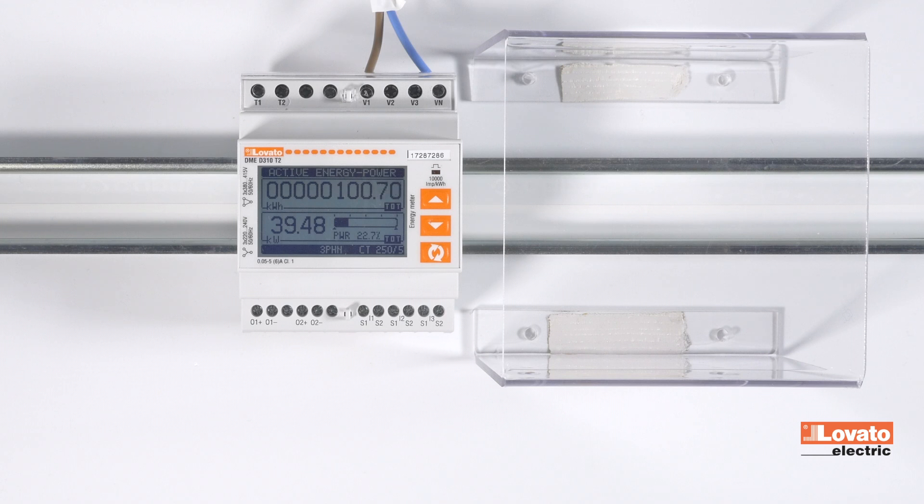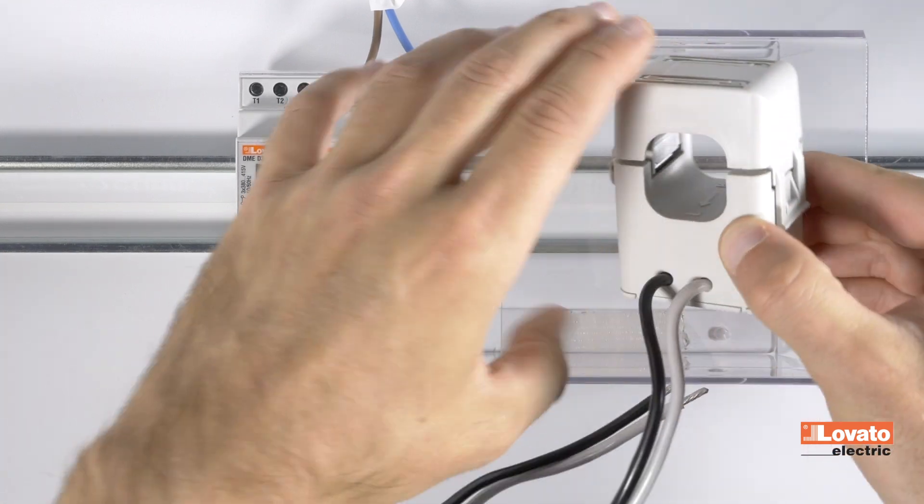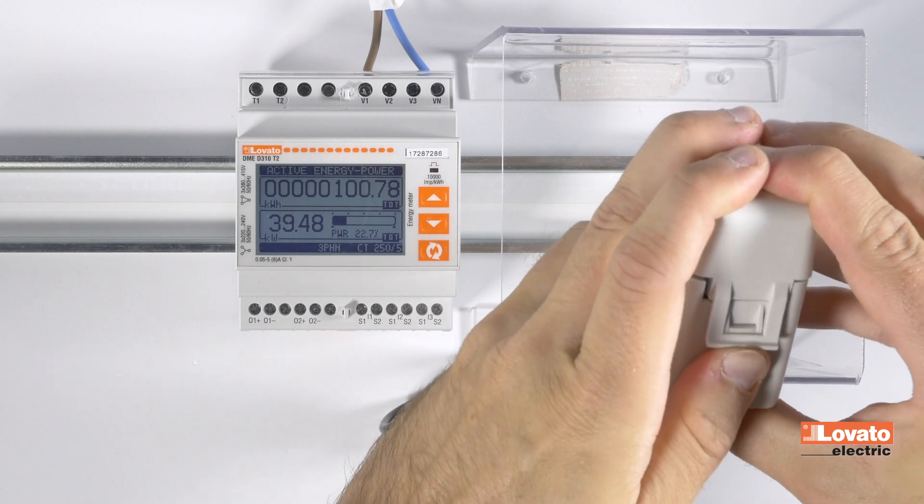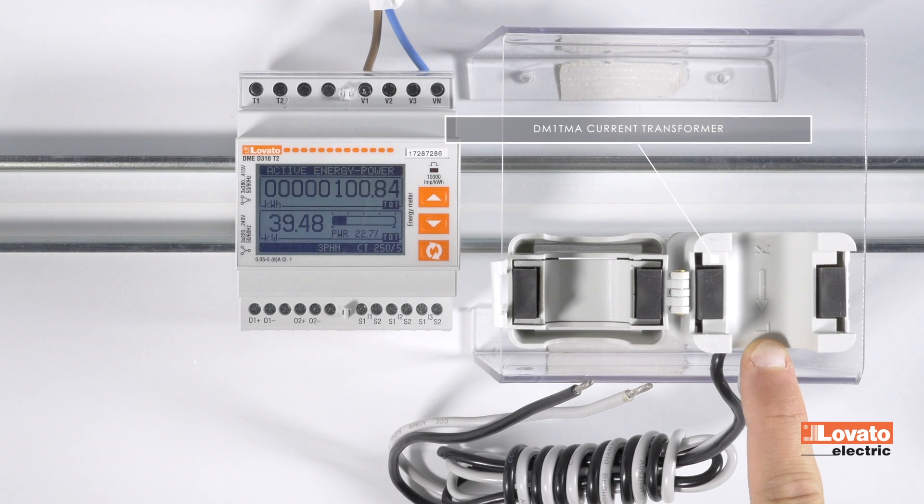To connect the openable compact pre-wired CT-DM1TMA at 250 amps, check the direction. The current has to enter from side K, visible here, and exit from side L, marked here.